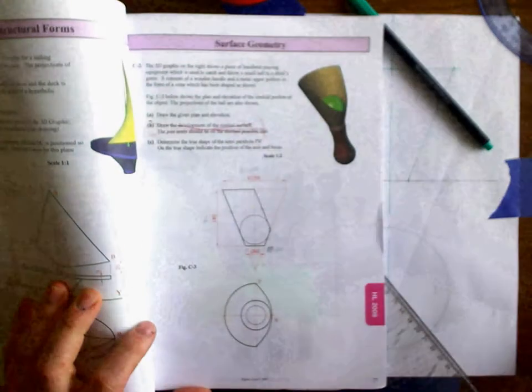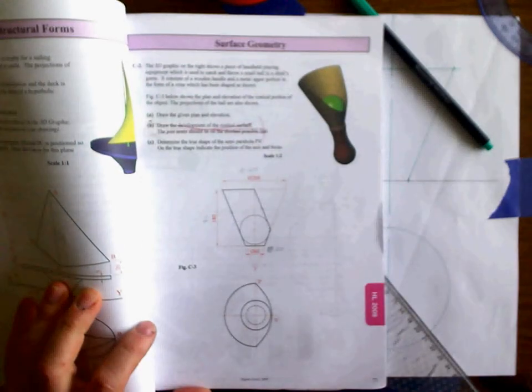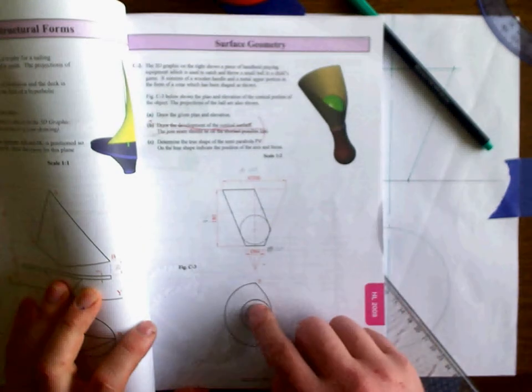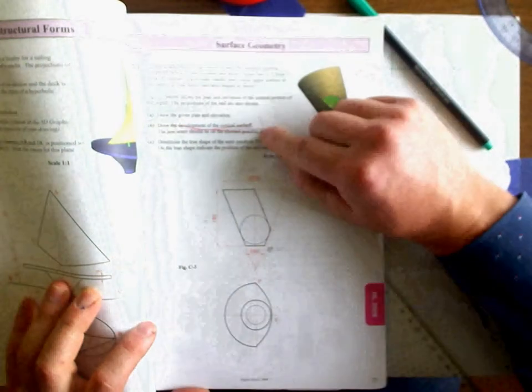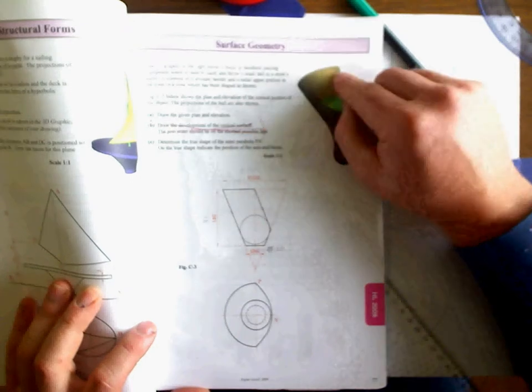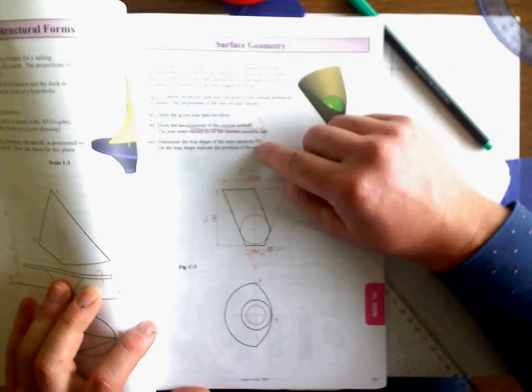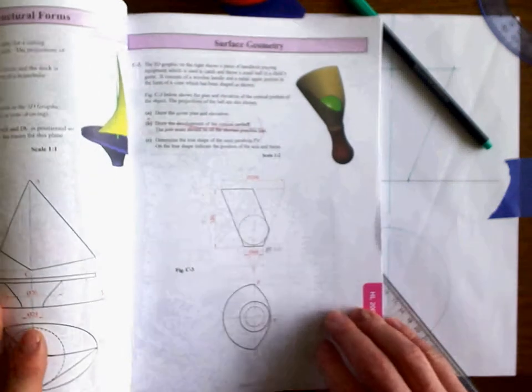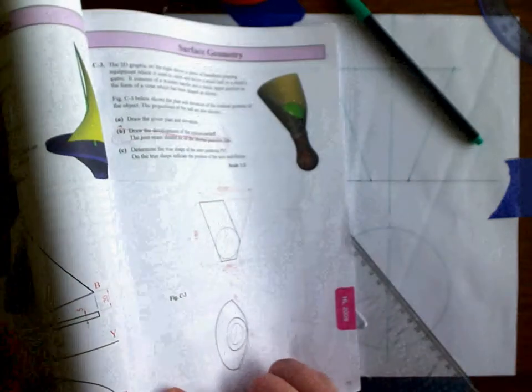The cone has been cut to create a parabolic curve. What we're asked to do in part A is draw the front elevation and the plan. I'm then going to quickly go through part B which is developing the conical surface. And then I'm going to mostly focus on part C, getting the true shape of the parabola PB and getting the position of the axis and focus.